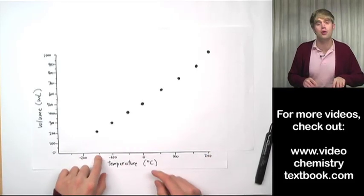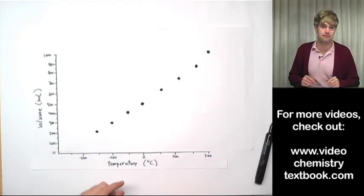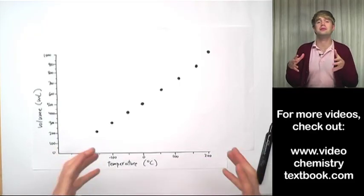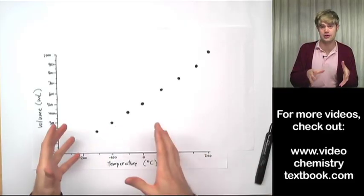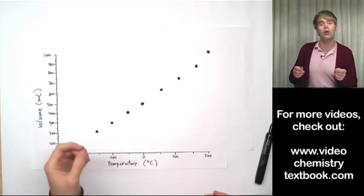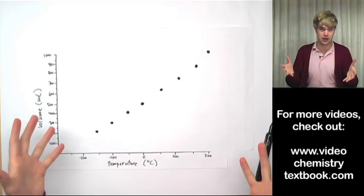So around negative 150 degrees Celsius one of two things is going to happen. Either I'm just not going to be able to get any colder because the freezers or the chemicals that I'm using aren't fancy enough. Or it's going to get so cold that my gas is going to become a liquid. That happens a lot.